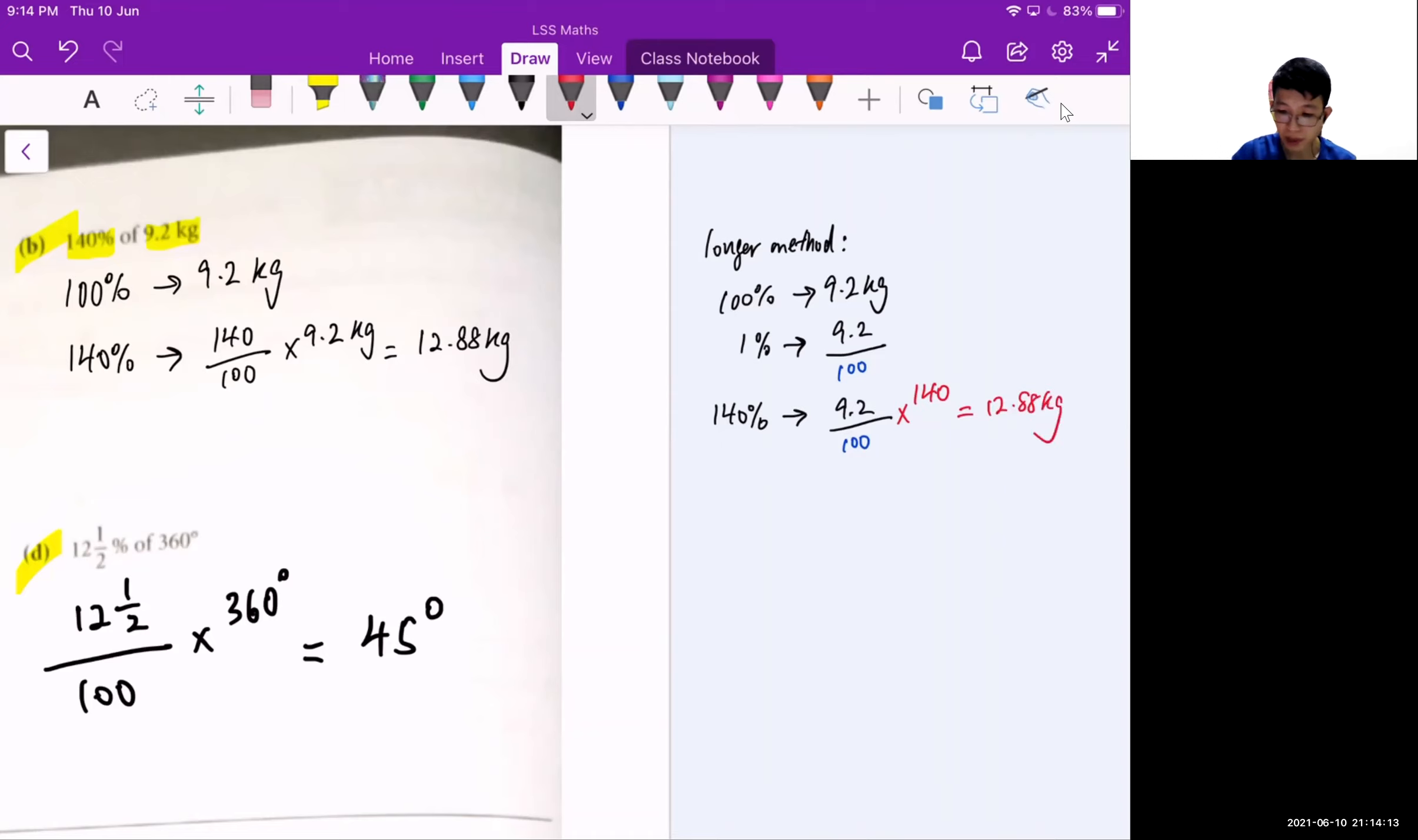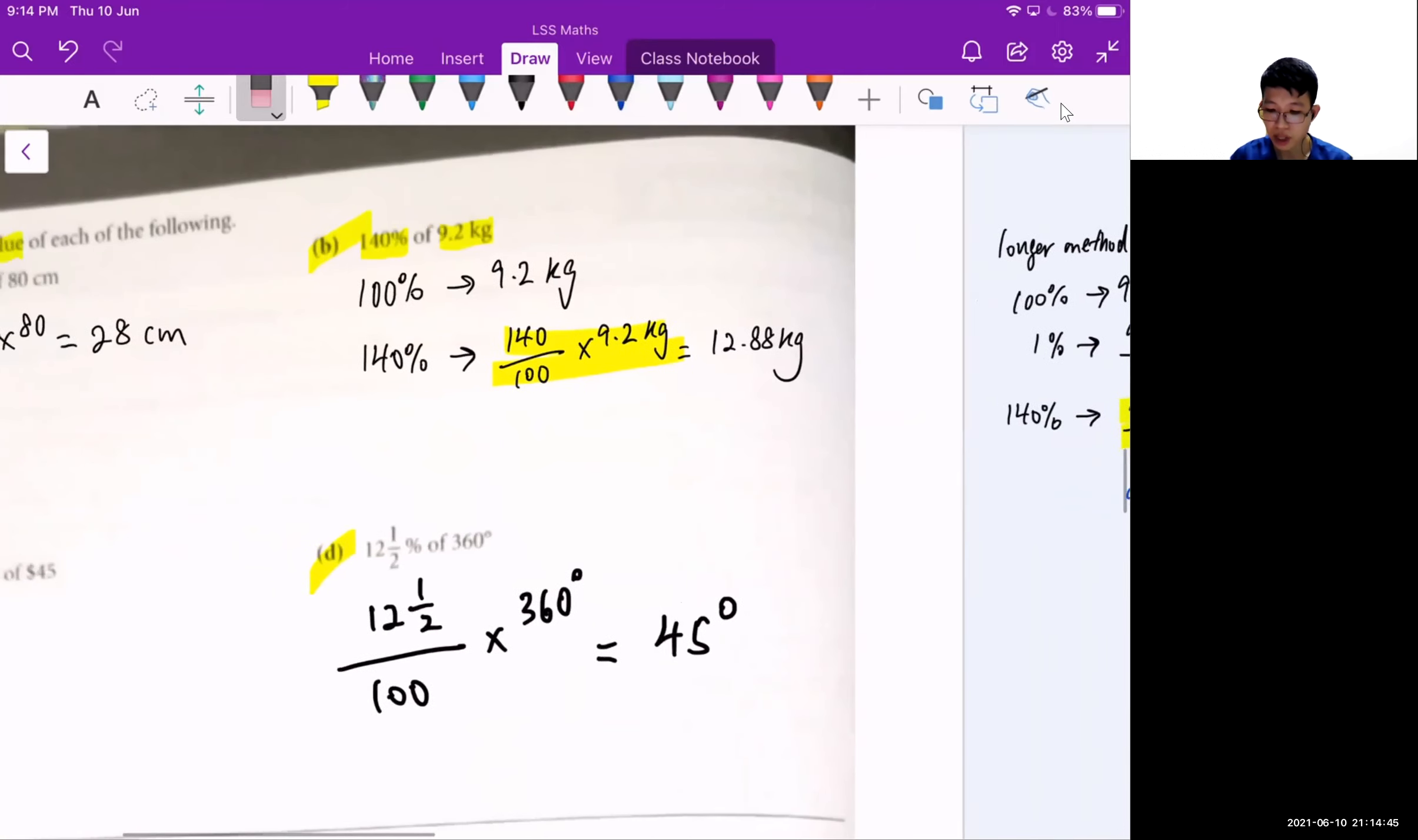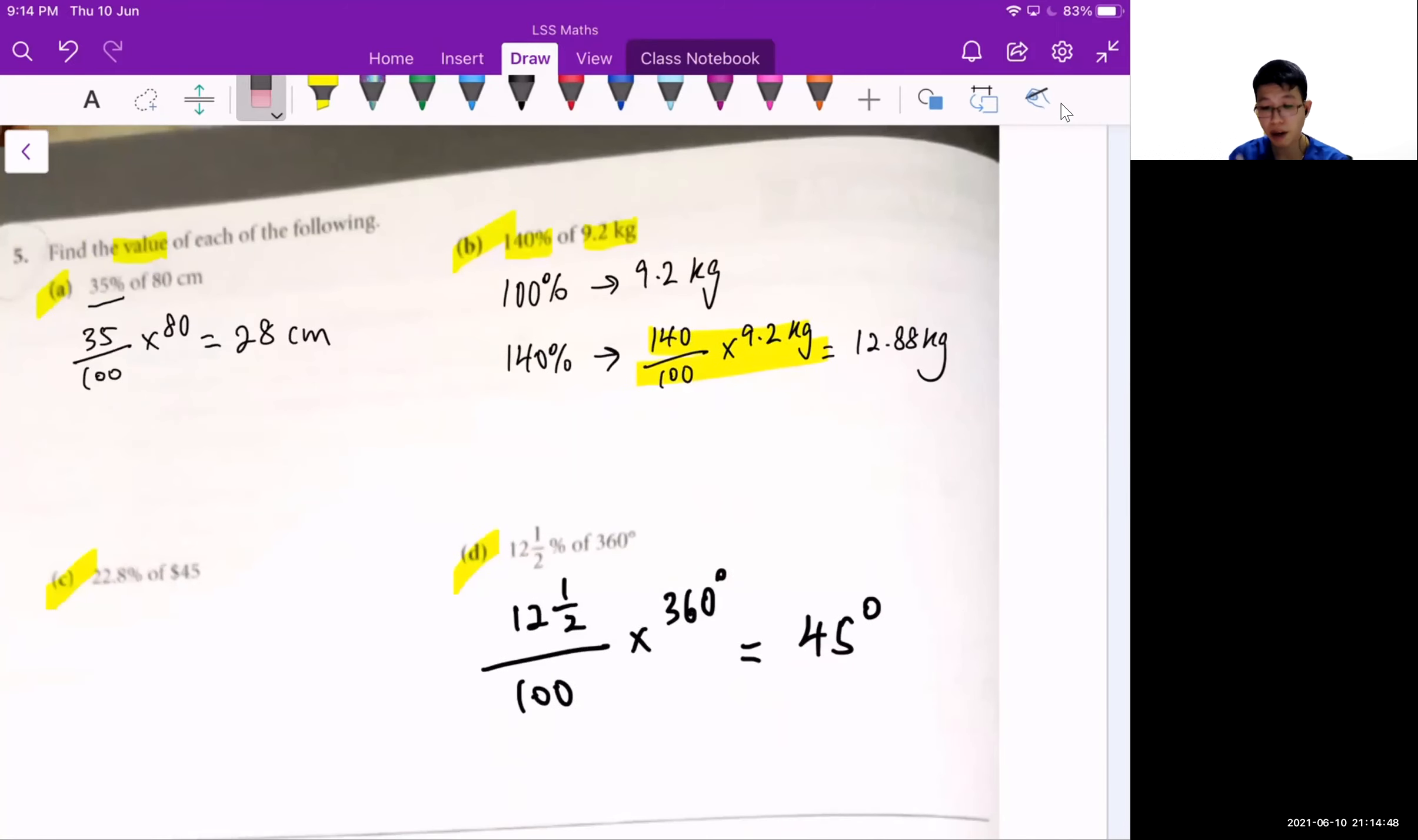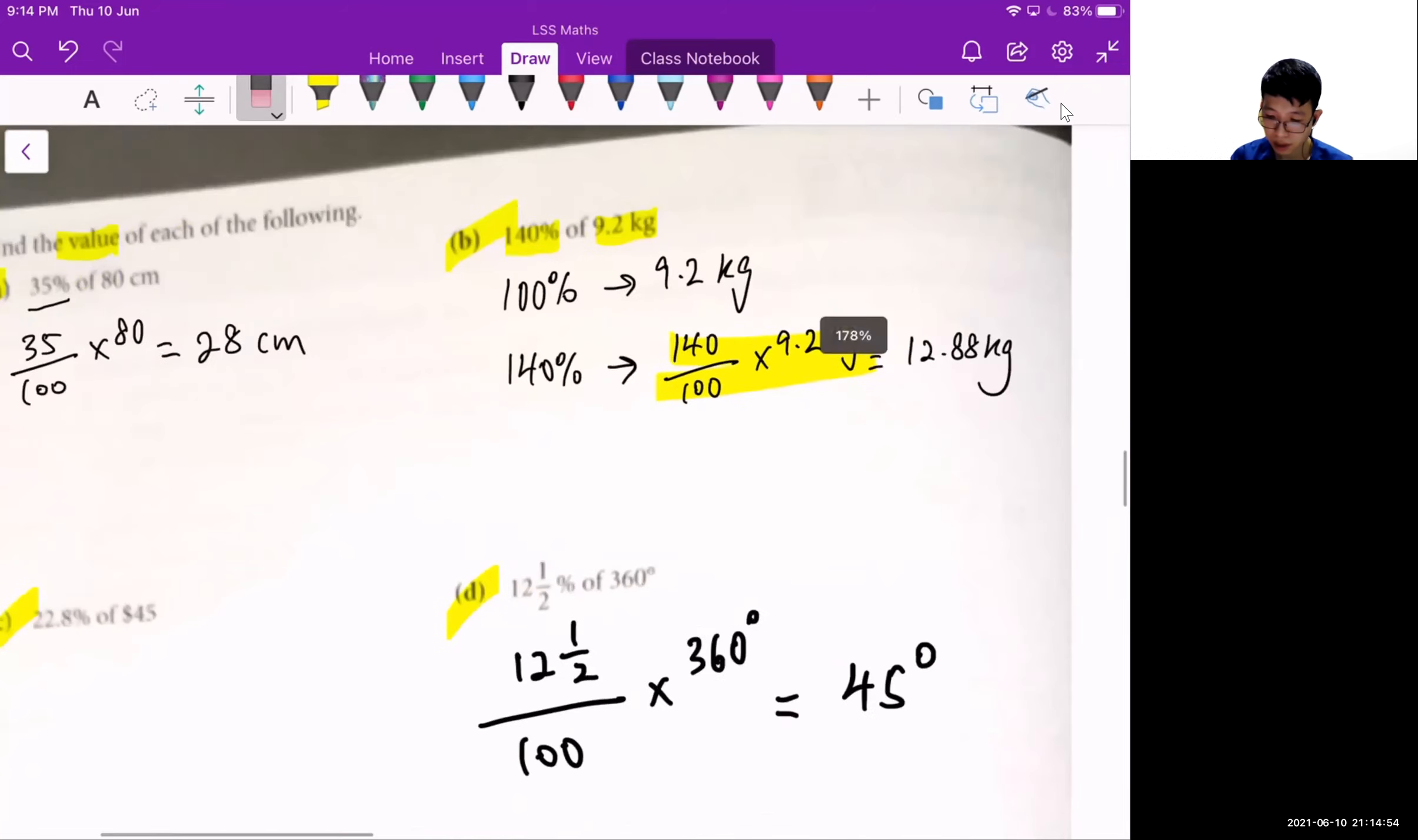So if you notice, this expression here is actually the same as 140 over 100 times 9.2. Why? Because 9.2 times 140 over 100 is the same as writing the one on the left hand side. So these are the same statement. That's why I can just take 140 over 100 times 9.2.